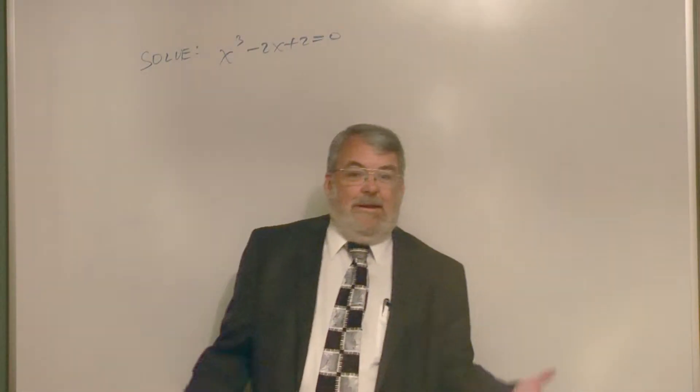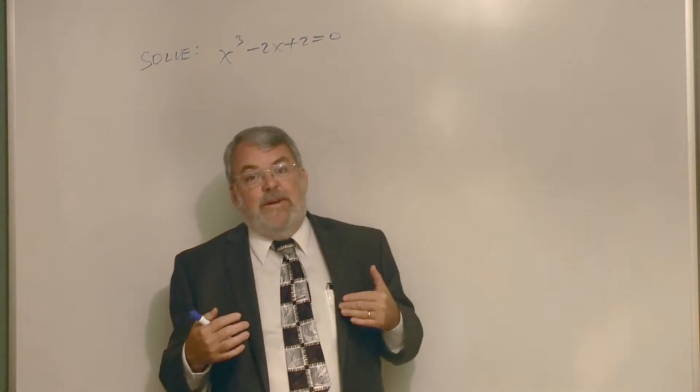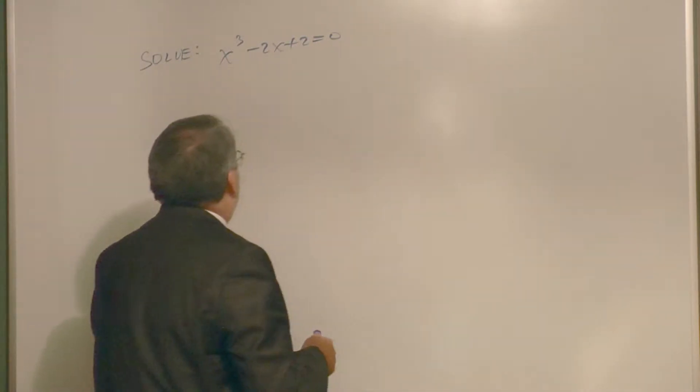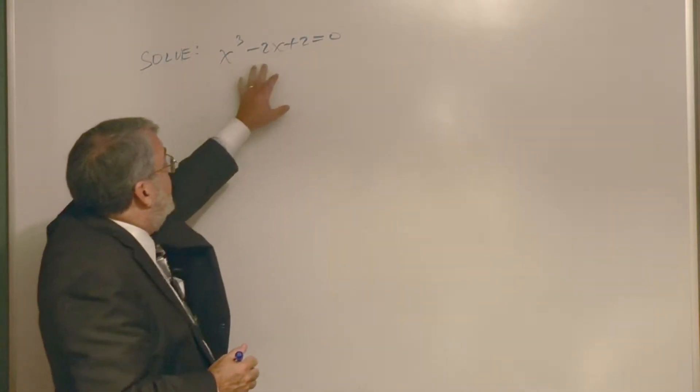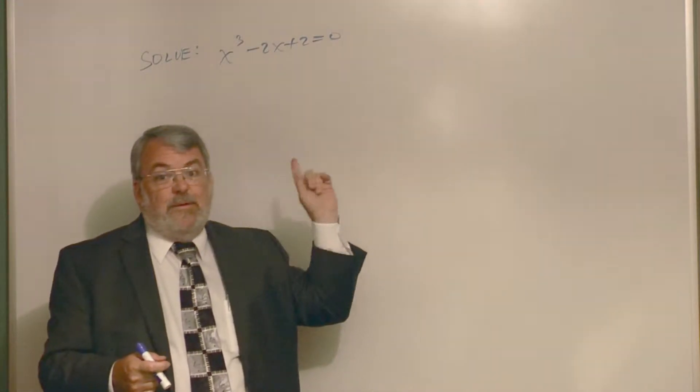I have a really nice one here and I have to tell you I got this out of Wikipedia because I wasn't motivated enough to figure out one myself. It's to solve x cubed minus 2x plus 2 equals 0 by Newton's method. It actually is possible to solve this directly.